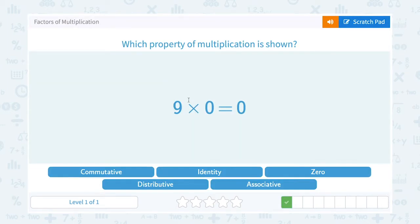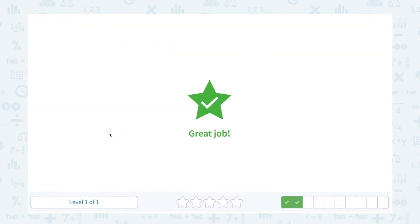9 times 0 equals 0. Just like we saw in the last problem, this is showing us that any number multiplied by 0 gives you 0 as an answer. So that is our zero property of multiplication.